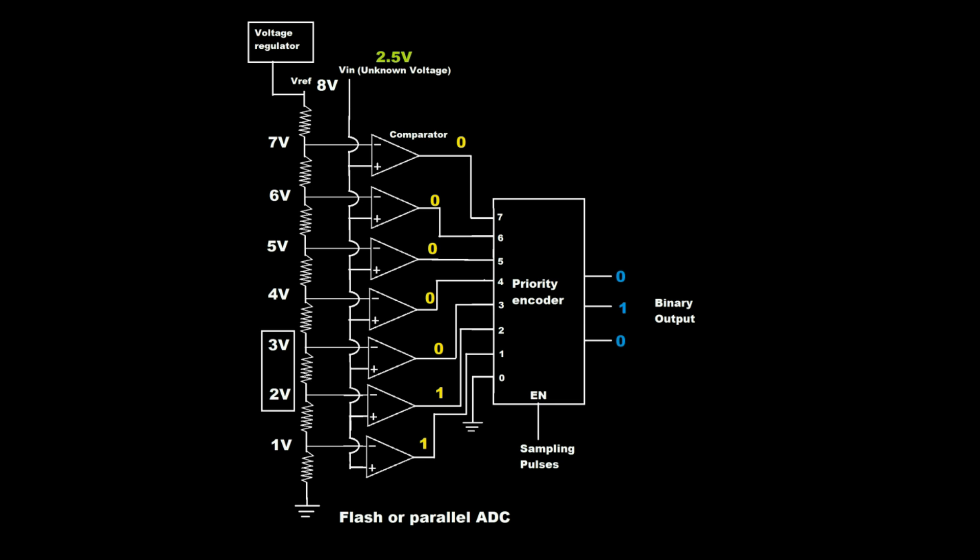Here, 2.5V is greater than 2V, so the comparator value is set to 1. The priority encoder gives the binary output.